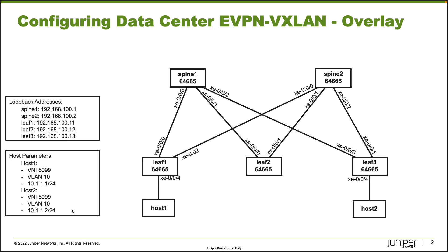Both hosts are going to be in VNI 5099, in the same VLAN, the same broadcast domain, and the same subnet. Host one has 10.1.1.1/24 and host two has 10.1.1.2/24. What we want to do is enable communication between host one and host two by configuring eVPN VXLAN. This is the overlay network, and there is IBGP in the fabric that is passing eVPN routes around.